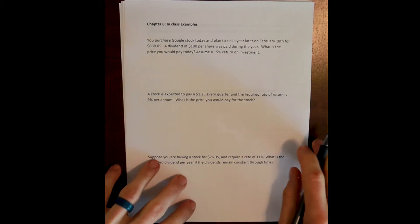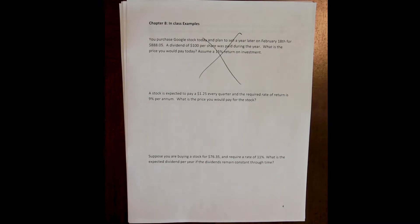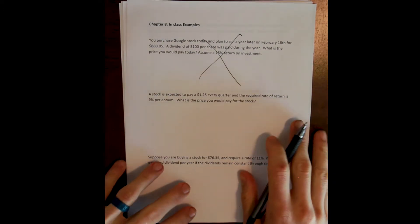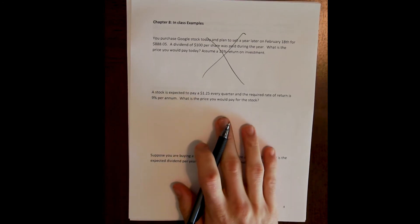Okay, let's work some examples. I'm gonna skip this, you won't see anything on this type of question, so don't worry about it. Let's start with this second example here. It says that a stock is expected to pay a $1.25 dividend every quarter and the required rate of return is 9% per annum. What is the price you would expect to pay for the stock?